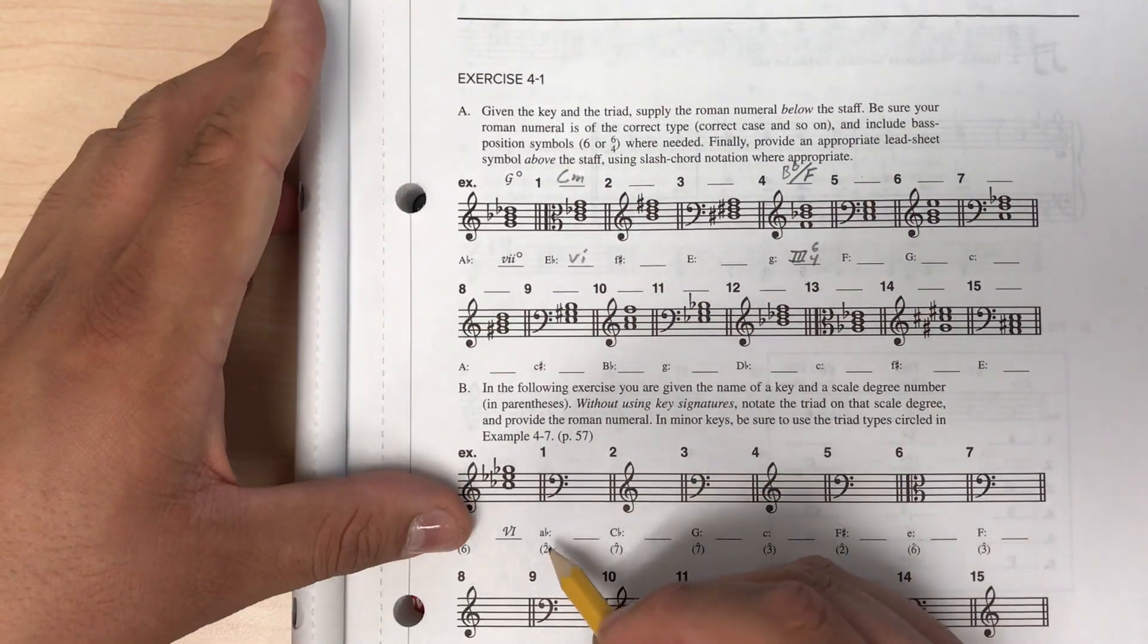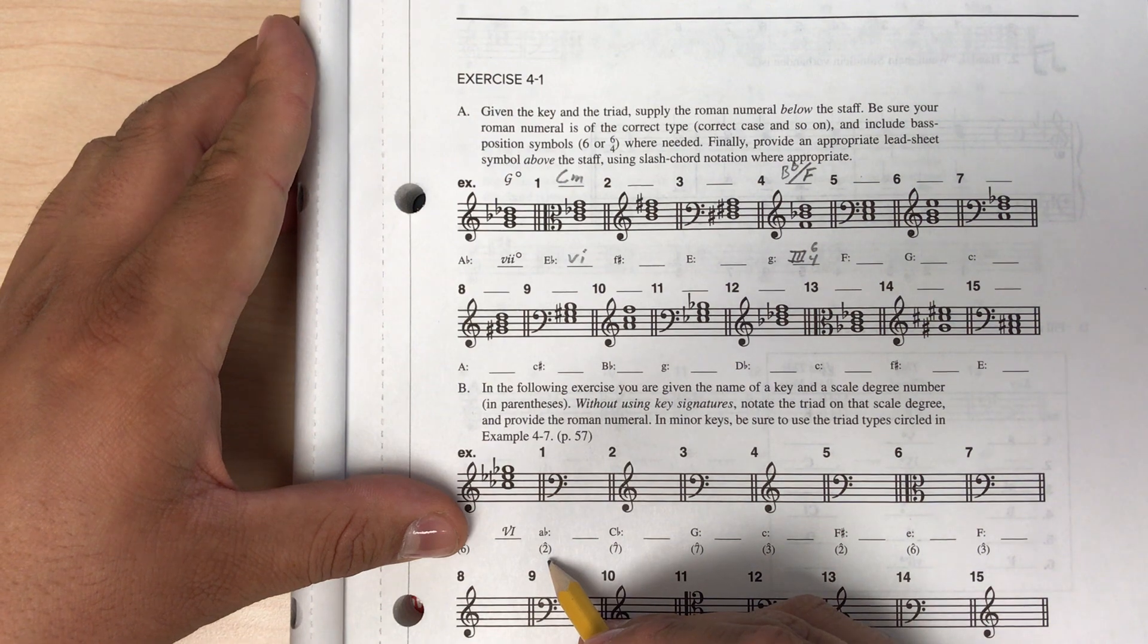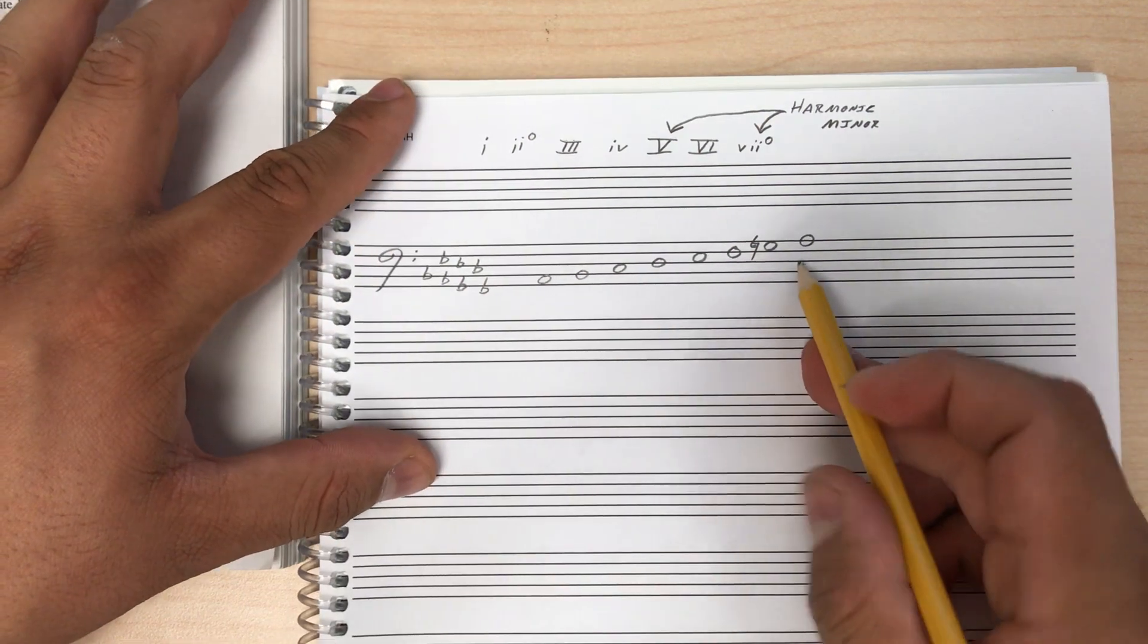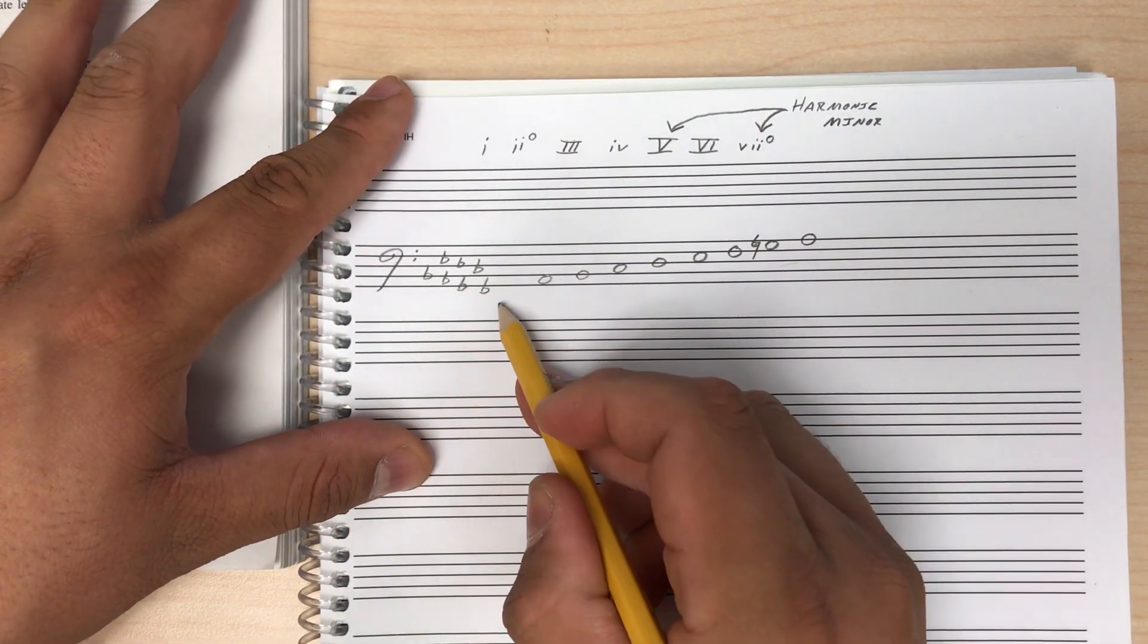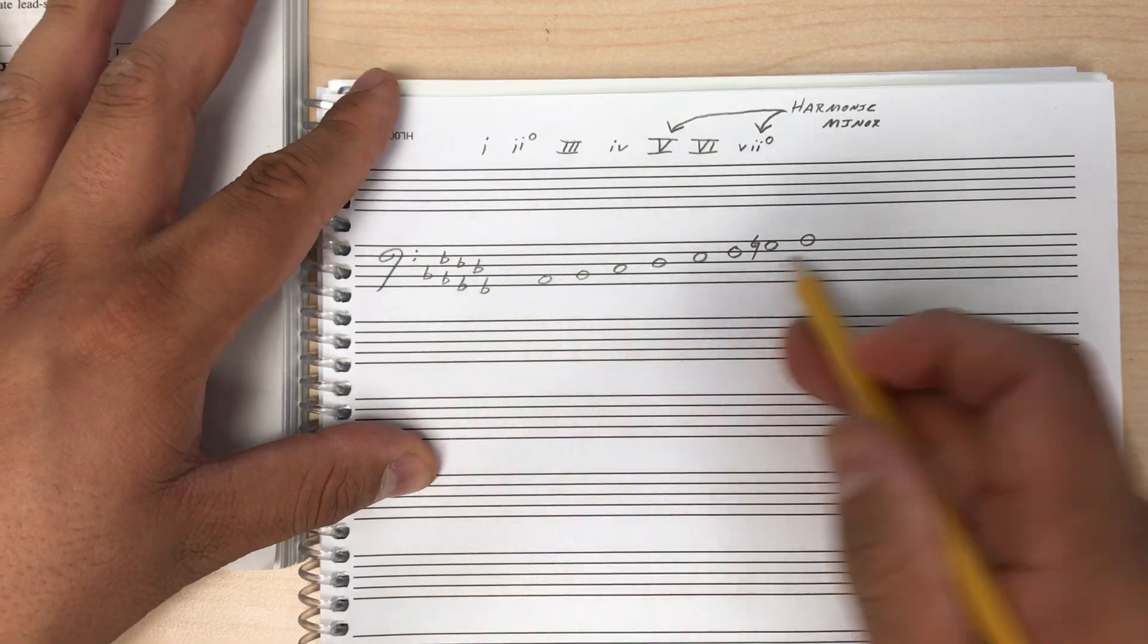So looking at this first one we're told we're in the key of Ab minor and we're going to build the II chord on Ab minor. So here I have an Ab minor scale. Ab minor has all flats, seven flats in the key signature. So I've written out an Ab harmonic minor scale,